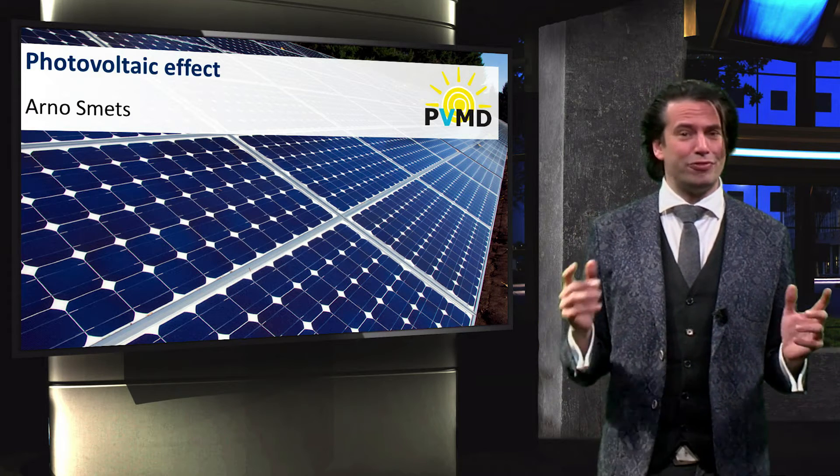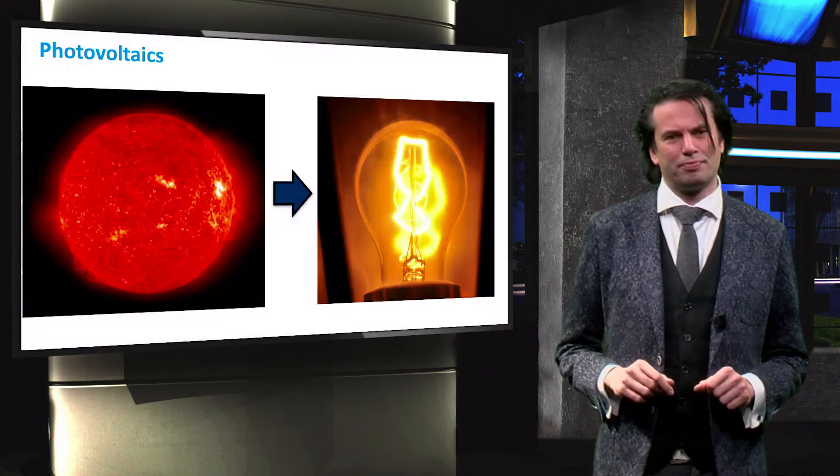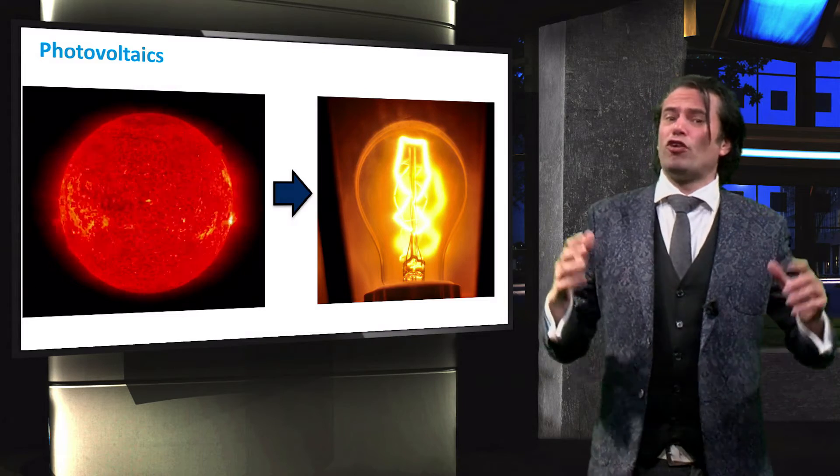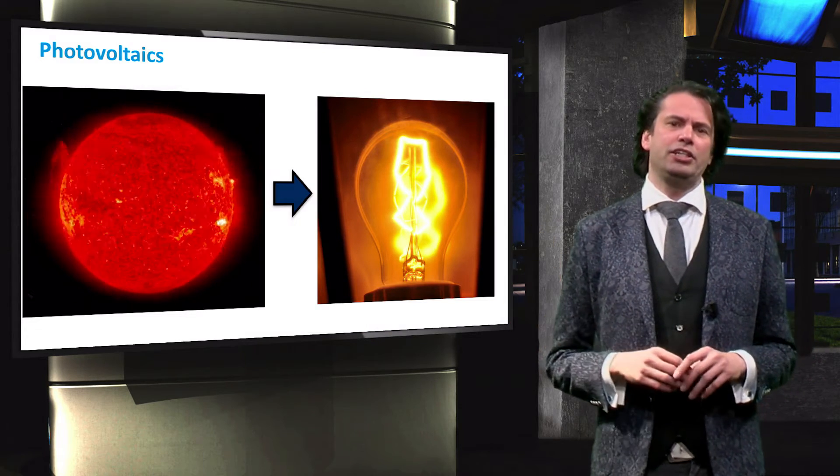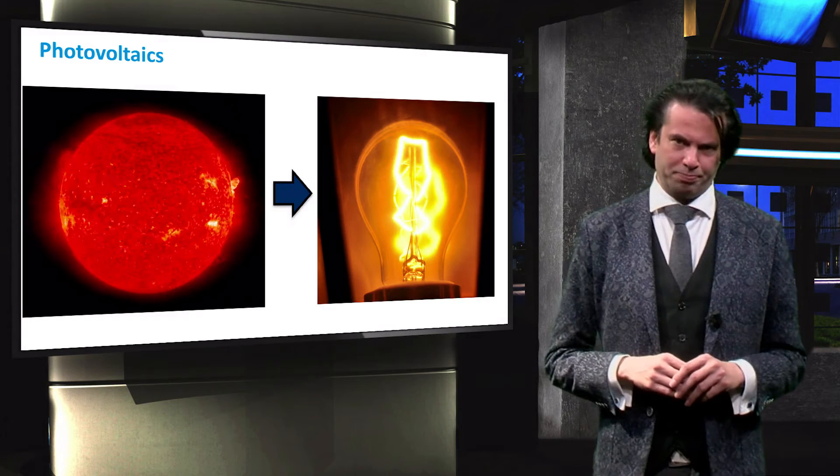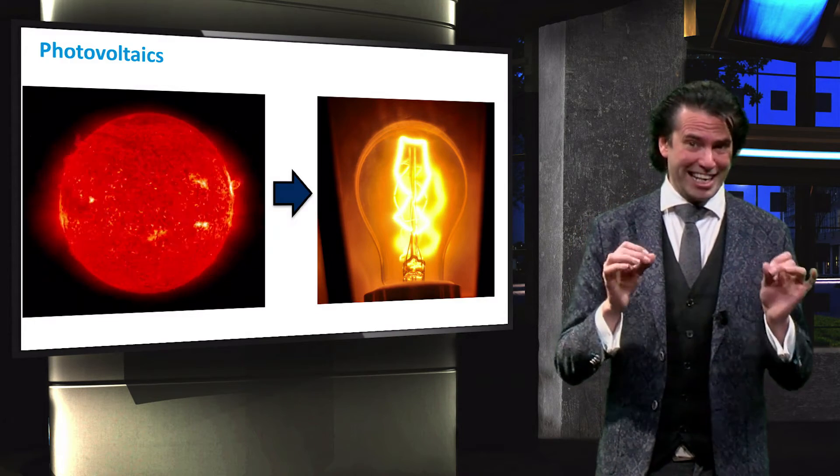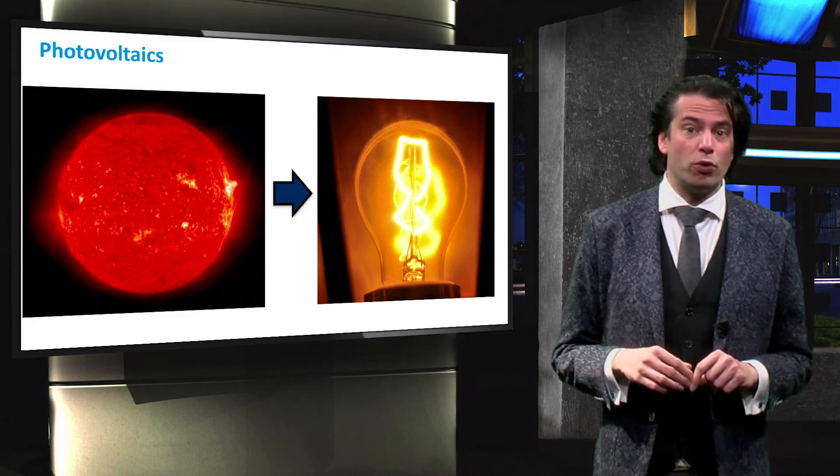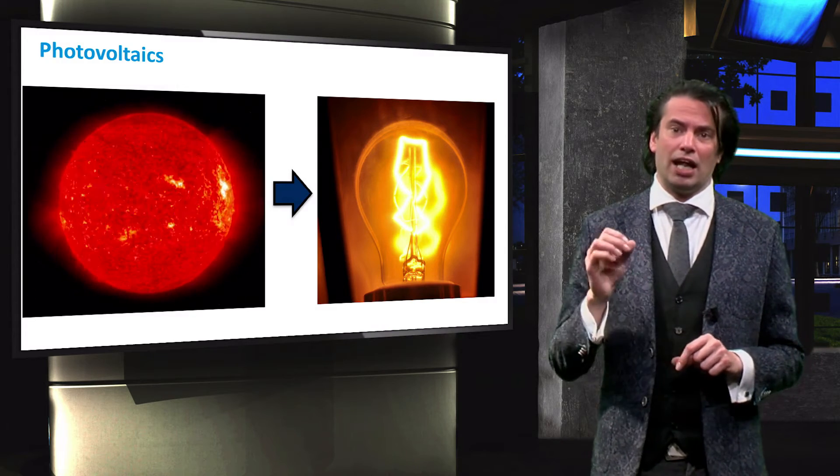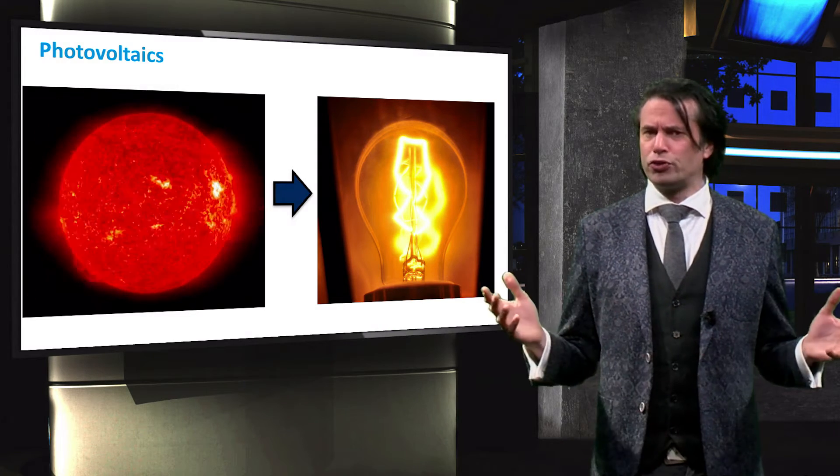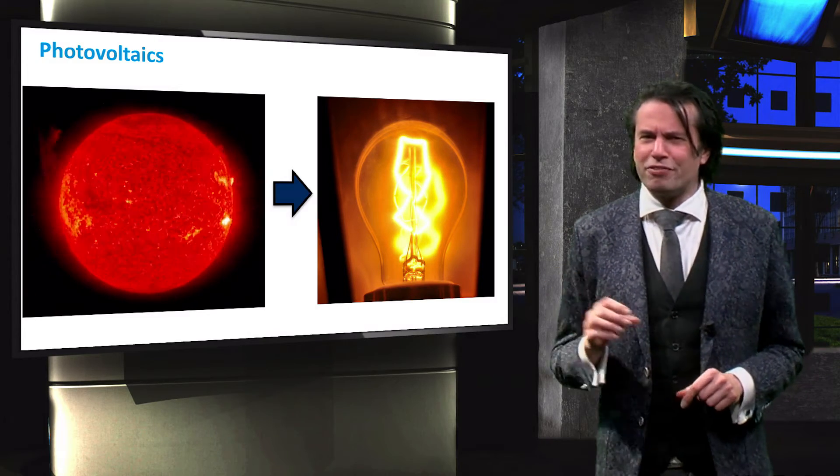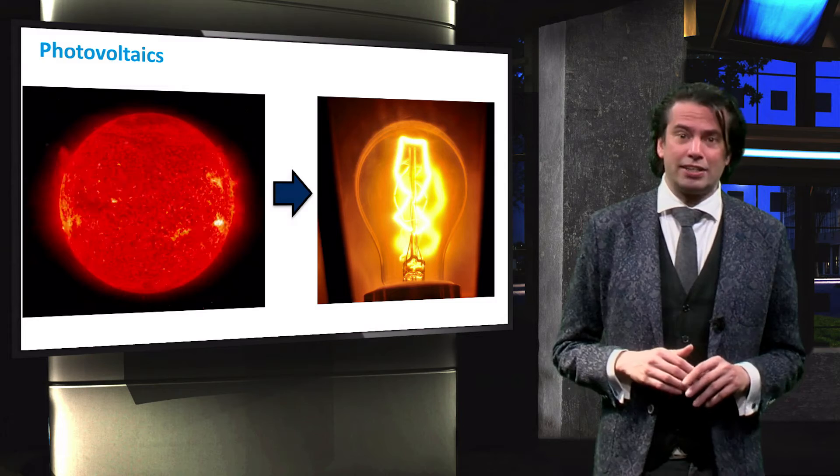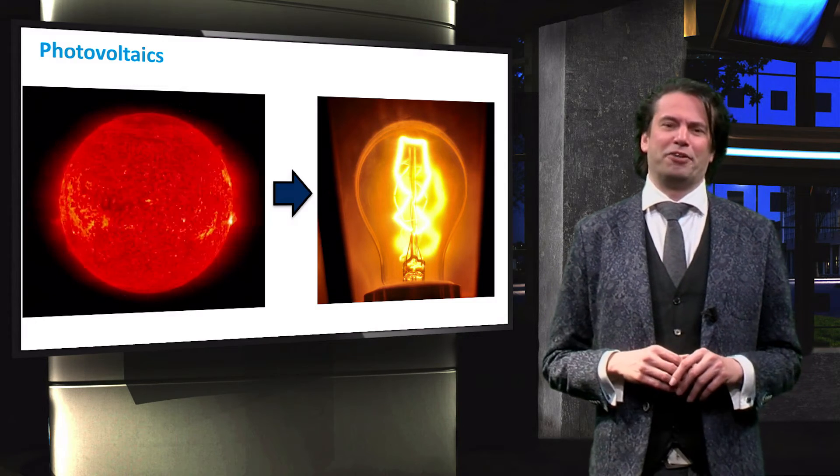This is done using the photovoltaic effect. Photovoltaics covers the direct conversion of sunlight into electrical energy by a semiconductor material. The term photovoltaics is derived from the Greek word phos, which means light, and volt, which refers to electricity, specifically voltage. Volt is a reference to the Italian physicist Alessandro Volta, who invented the battery.